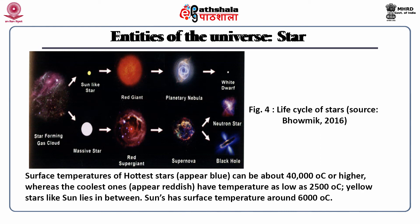Surface temperatures of the hottest stars can be about 40,000 degrees centigrade or even higher, whereas the coolest ones have temperatures as low as 2,500 degrees centigrade and appear reddish. Yellow stars like our sun lie in between these two extremes — the sun's surface temperature is about 6,000 degrees centigrade.